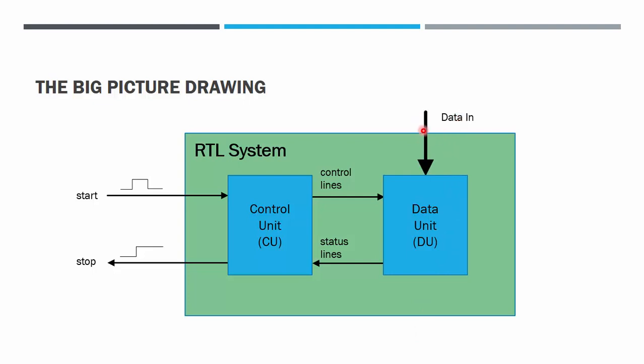It is a thick arrow because most likely there will be many many bits that will be coming in as data into data unit. Start and stop lines normally are one bit lines.